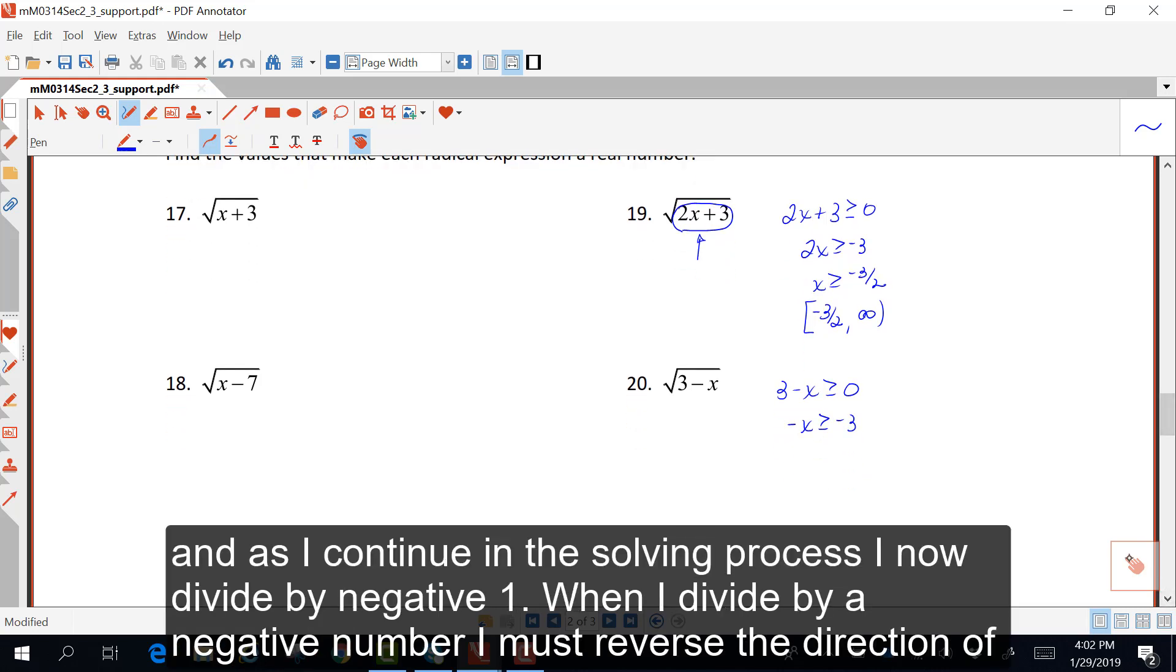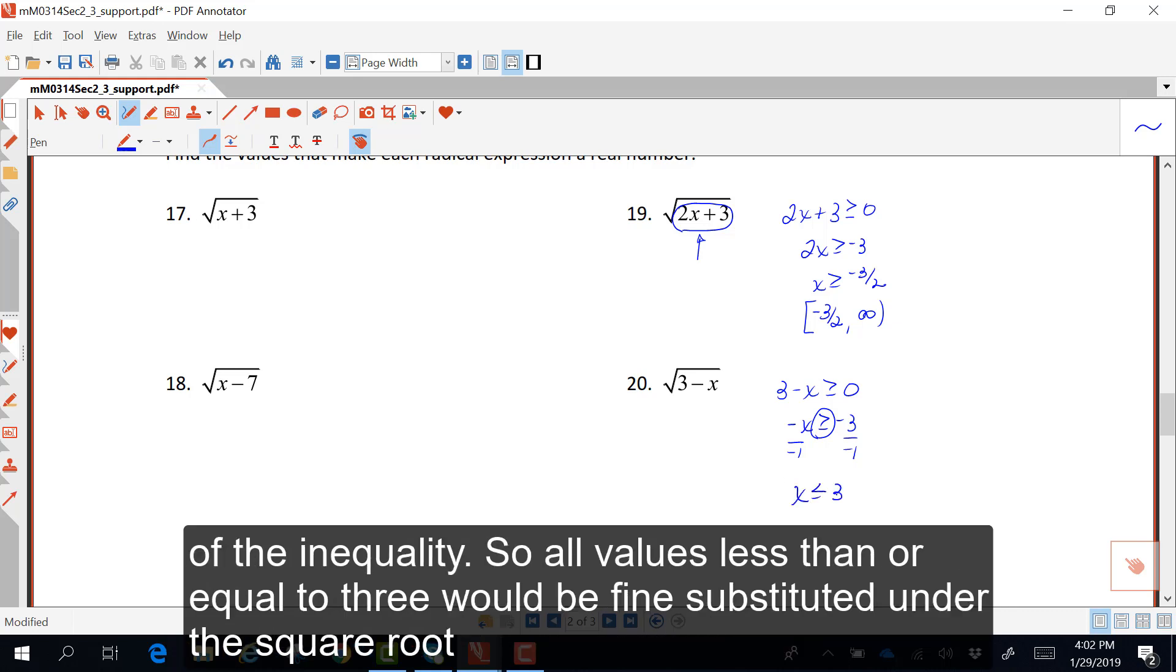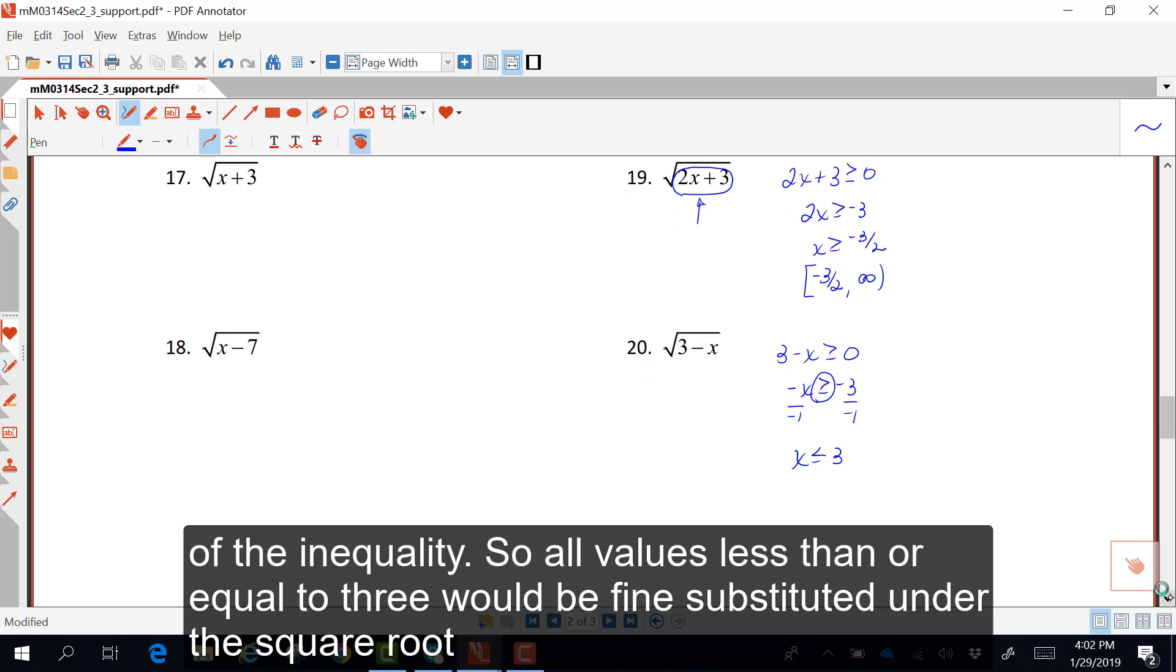And as I continue in the solving process, I now divide by negative 1. When I divide by a negative number, I must reverse the direction of the inequality. So all values less than or equal to 3 would be fine substituted underneath the square root.